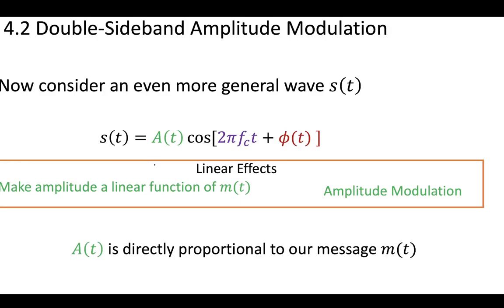Now, when we apply amplitude modulation, this means that the amplitude here of this cosine wave is going to be directly proportional to some message m(t). This is our baseband message that we want to send, and we're going to make the coefficient A, the amplitude of this cosine wave, directly proportional to our message.